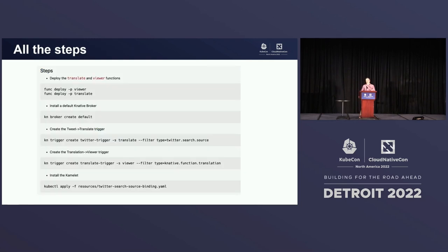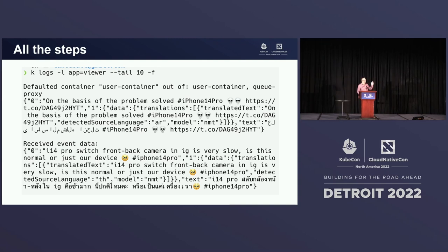So how do we put all these things together? It's just a handful of command line calls. To deploy the two functions, we use the func deploy command — we deploy the viewer function and the translate function. Then to create an event broker, we use kn broker create default to create a default in-memory event broker. Then we use kn trigger create to create the two triggers, giving them names. The dash-s flag tells us where the events are going to go. The first one sends events to the translate function filtering on type Twitter search source. The second sends events to the viewer function filtering on type Knative function translation. Finally, we use kubectl apply to apply the YAML that is our Twitter search Camlet.